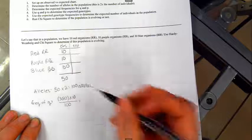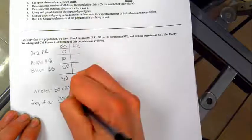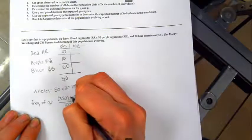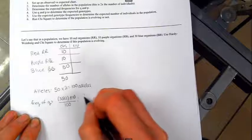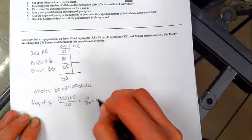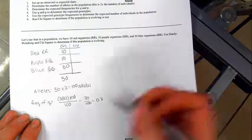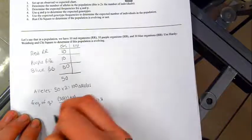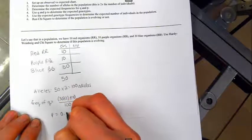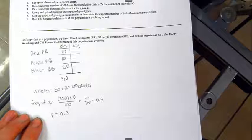we get 60. And this should be plus, sorry, not times. 60 plus 10 is 70 out of 100. And that's going to give us a frequency of 0.7 for Q. We know that P plus Q equals 1. So P is going to have to equal 0.3.